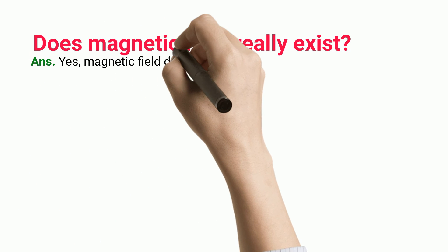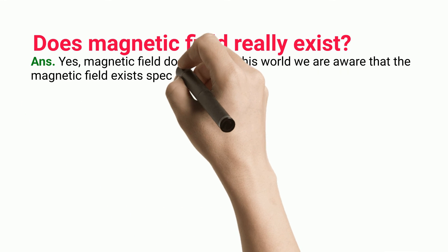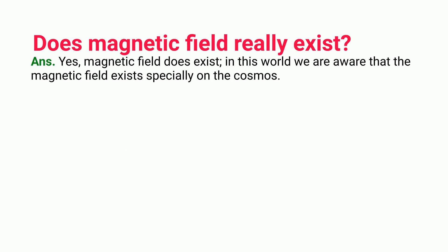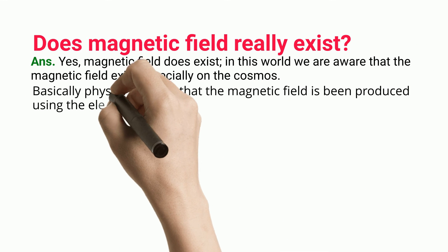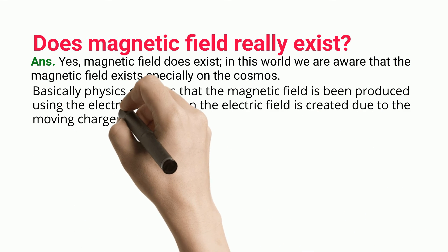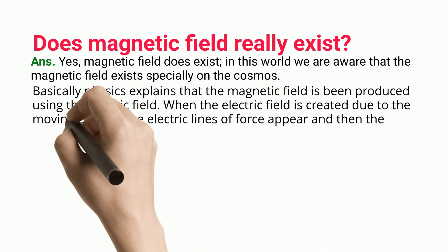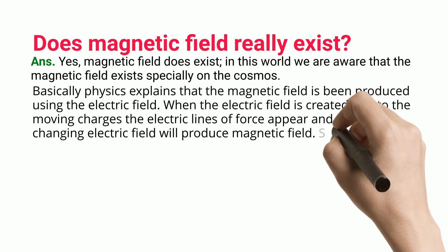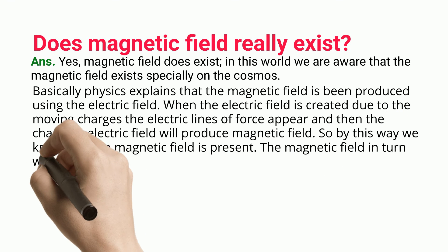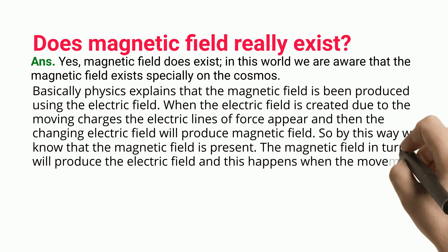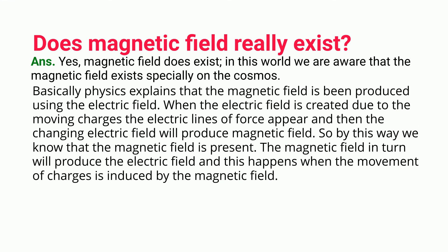Does a magnetic field really exist? Yes, the magnetic field does exist. We are aware that magnetic fields exist, especially in the cosmos. Physics explains that the magnetic field is produced using the electric field — when the electric field is created due to moving charges, electric lines of force appear, and then the changing electric field produces the magnetic field. The magnetic field in turn can produce the electric field when movement of charges is induced by it.